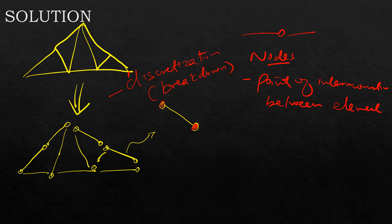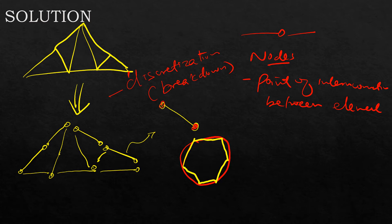Values are exact only at the nodes. At any other point we do what we call interpolation. For example, if we approximate the area of a shape or the circumference of a circle using linear elements, the value is exact just at the node where it touches the circumference — any other point is just an approximation. The degrees of freedom are the fundamental variables calculated during analysis, representing the different ways our structure can deform — for a truss we talk about displacement.